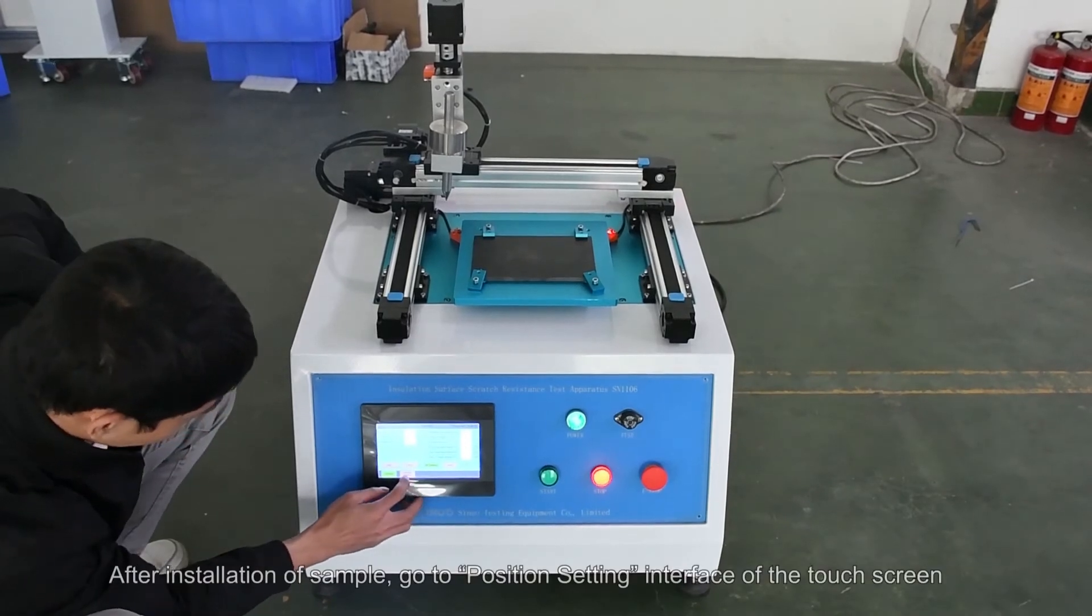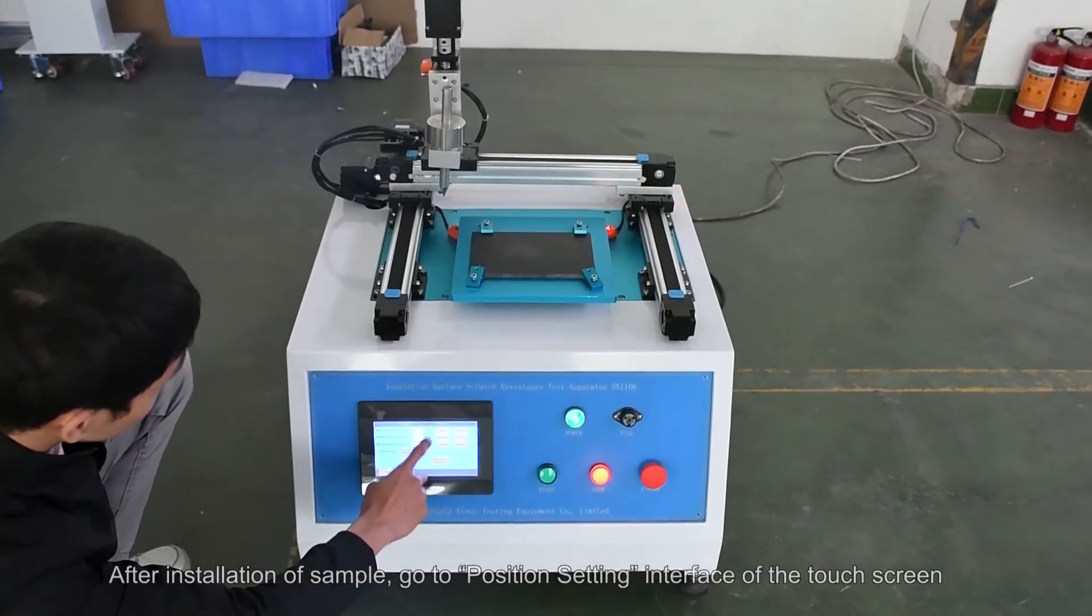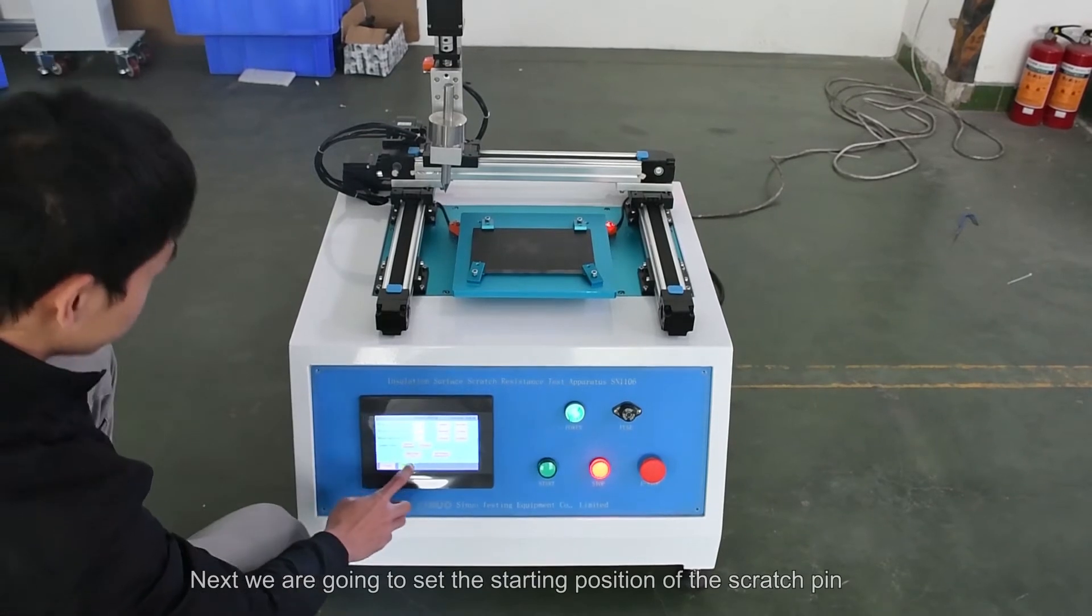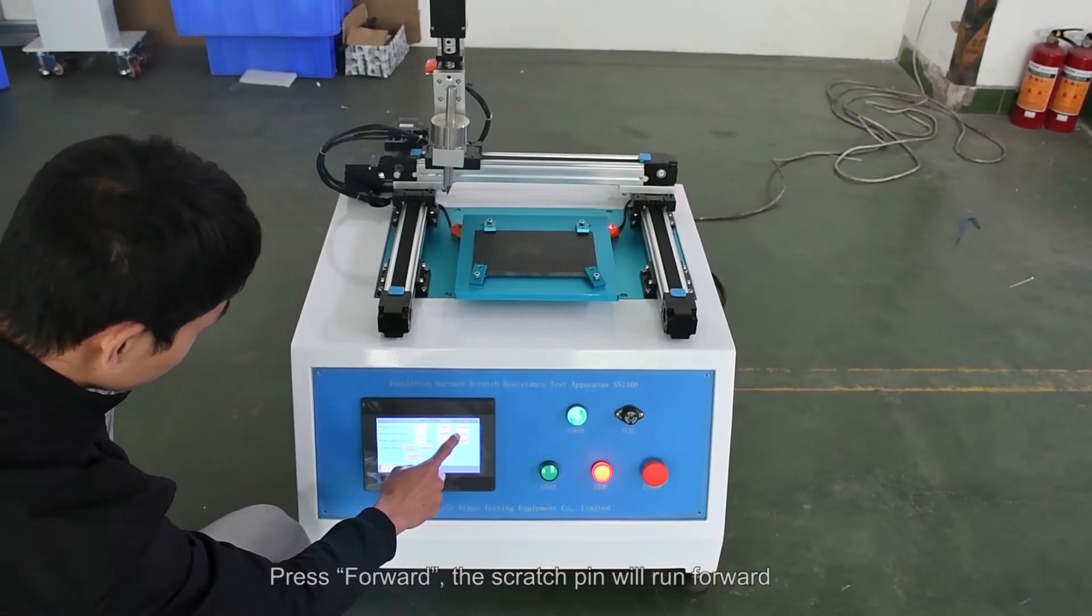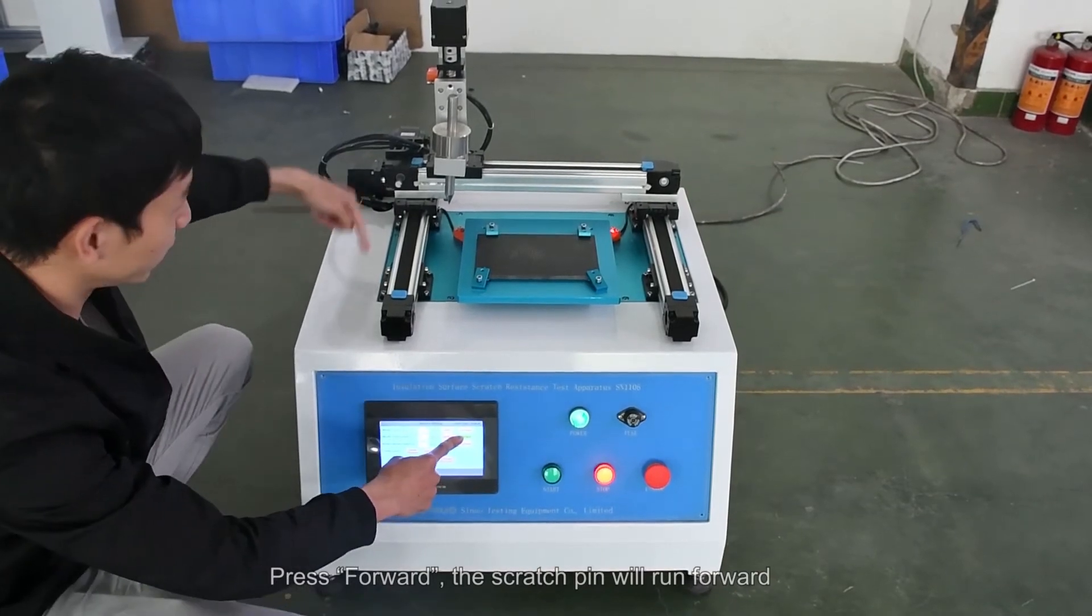After installation of sample, go to position setting interface of the touch screen. Next we are going to set the starting position of the scratch pin. Press forward, the scratch pin will run forward.